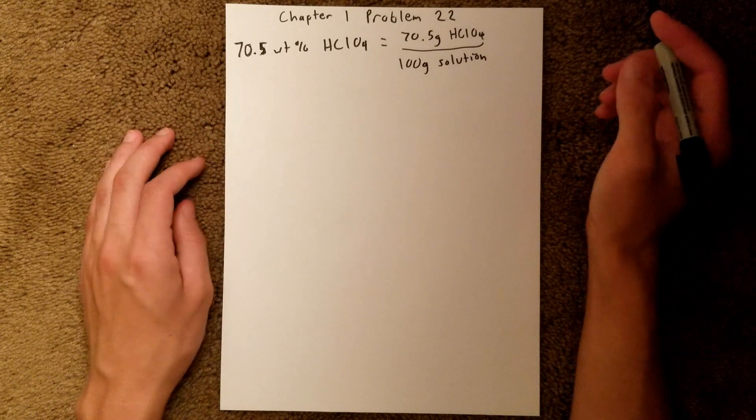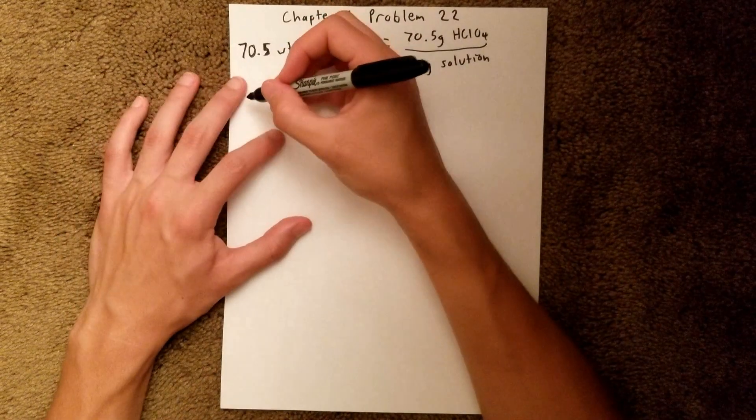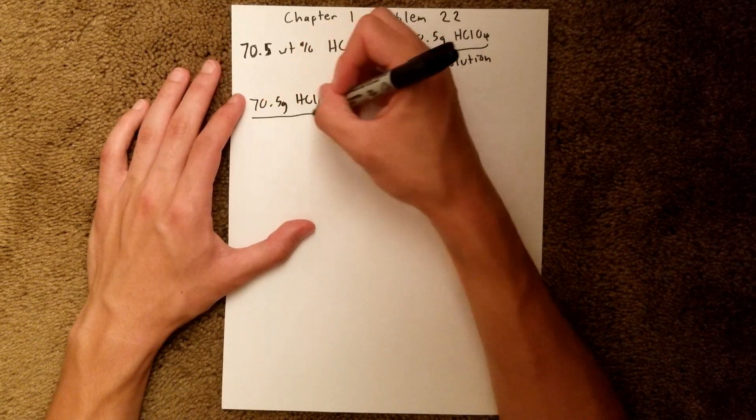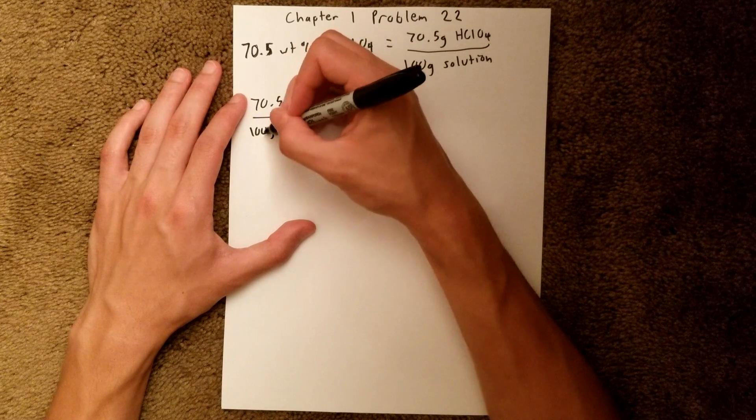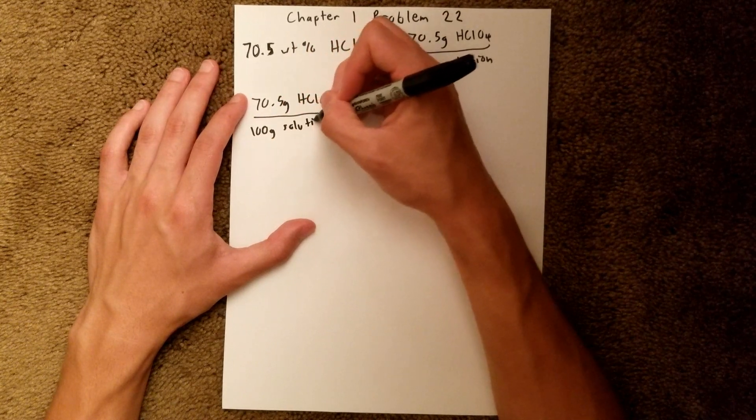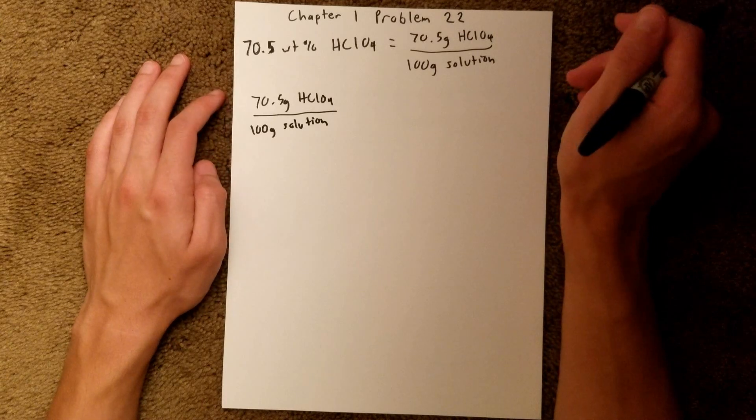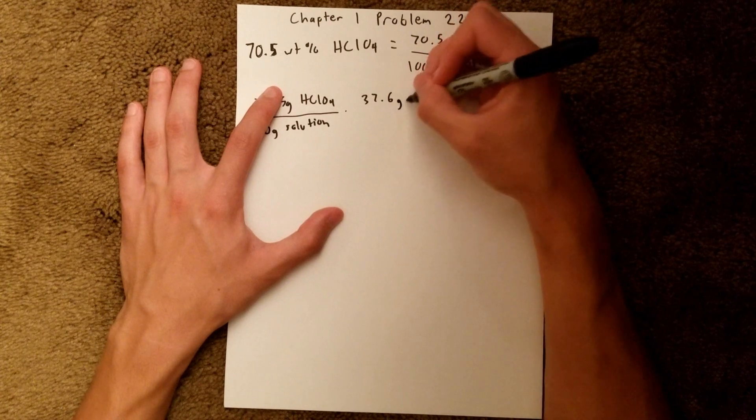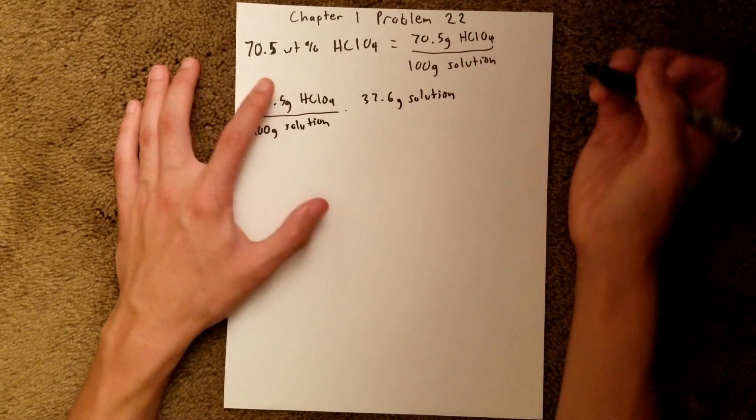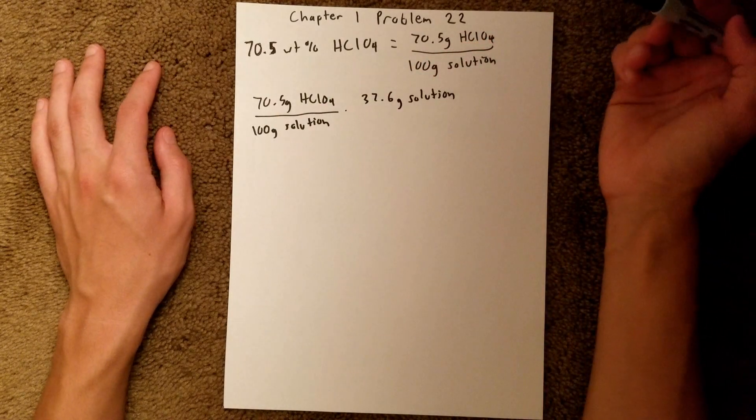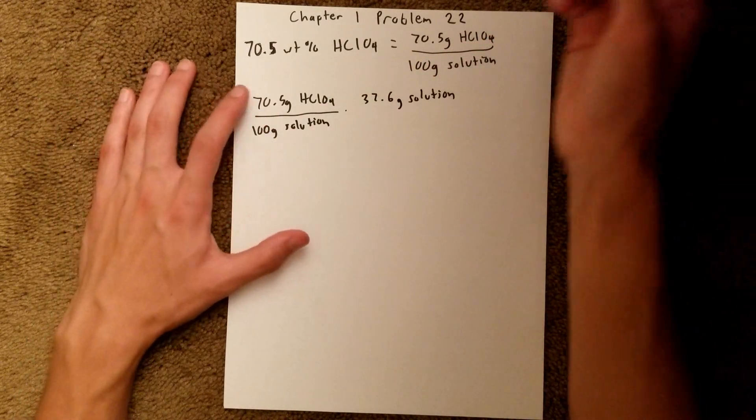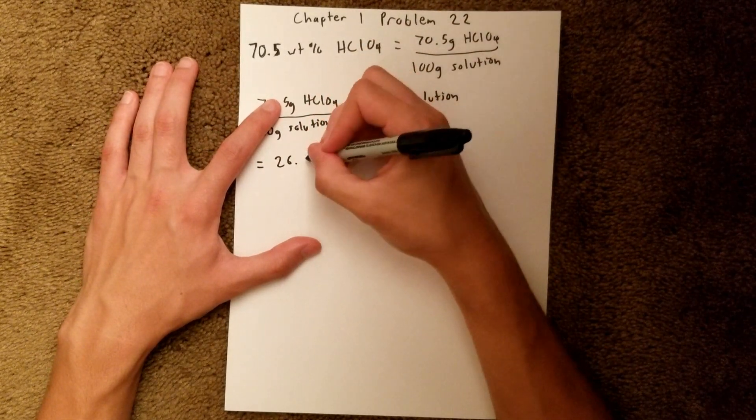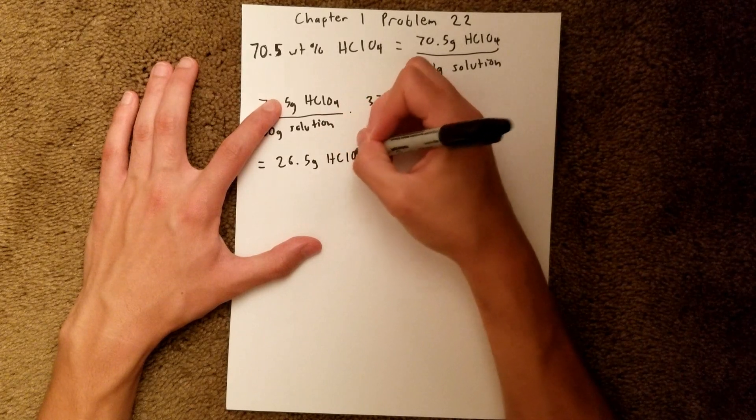And so what we can do is we can say 70.5 grams of HClO4 divided by 100 grams of HClO4, and we are given the mass of the whole solution, multiplying by 37.6 grams of solution. And as you can see, the grams of solution unit cancels out, and we are left with grams of HClO4. So when you plug that into your calculator, you should get 26.5 grams of HClO4.